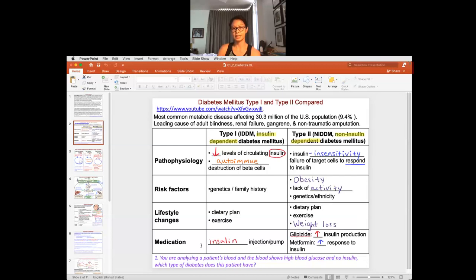In type 1, you really need the insulin, so they have to have that treatment. In type 2, there's medication that helps to increase the response to insulin, but also medication to increase the production of insulin to make sure that the sensitivity increases.